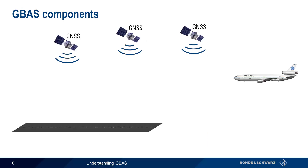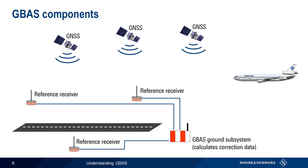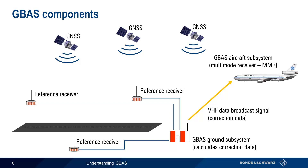Let's look at the different components in a GBAS system. Around the airport, a set of precisely surveyed reference stations communicate with the GBAS ground subsystem in order to collect position data and calculate the differential offsets, or corrections. This correction data is then transmitted to approaching aircraft using a VHF data broadcast signal. An onboard multimode receiver uses both the GNSS satellite signals as well as this ground-based correction data to obtain the augmented accuracy and reliability needed for approach and landing using GNSS.